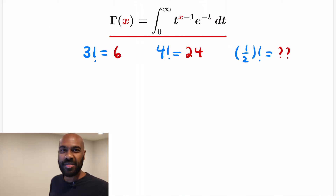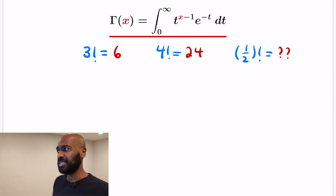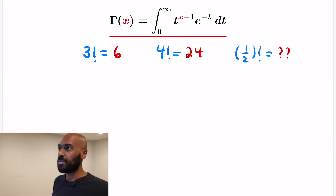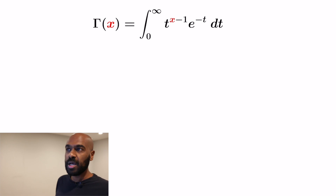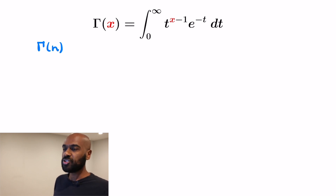Welcome to today's video, I'm Prof Omar. Today we're interested in figuring out what a reasonable answer to the question of what is a half factorial should be. We're going to answer that by examining this gamma function. The first thing we're going to do is prove that the gamma of a natural number n happens to have a value that looks like a factorial. So let's actually look at gamma of n.